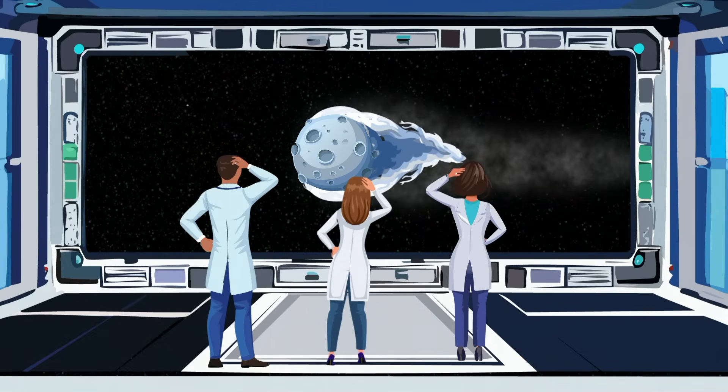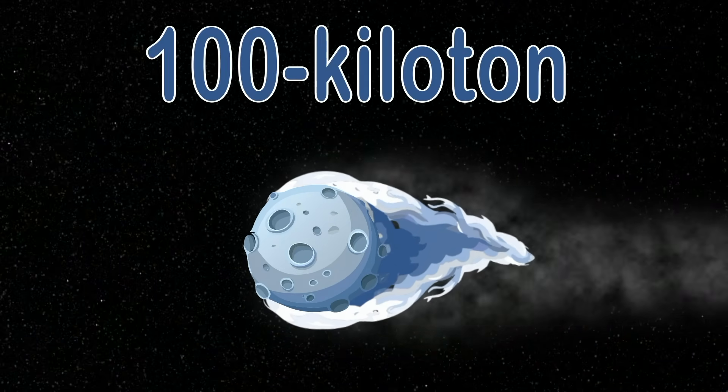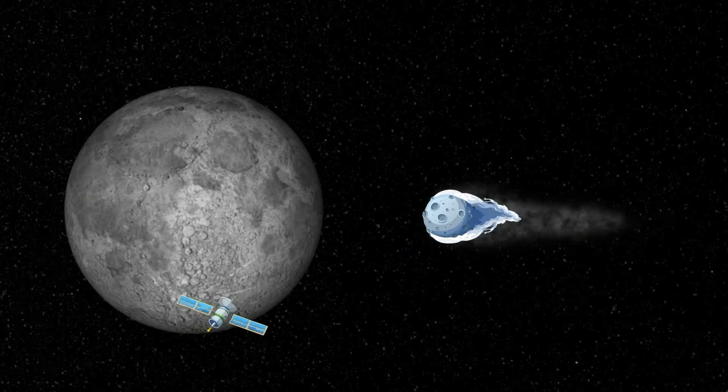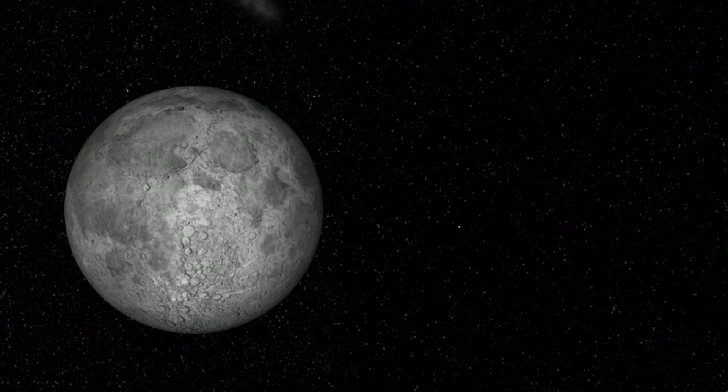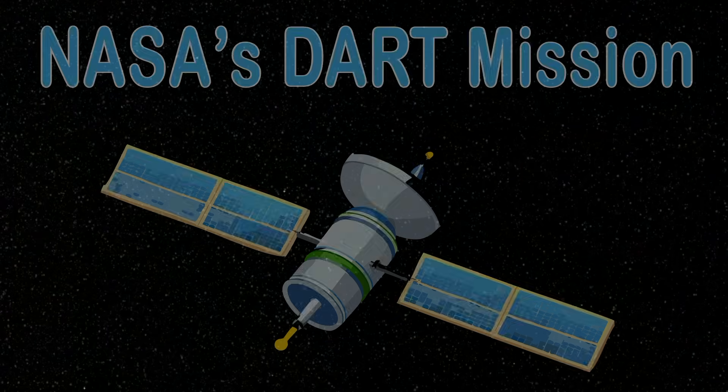But how do humans plan on stopping me? With 100 kiloton devices to break me up potentially? You'd be using a spacecraft to alter my trajectory, as done with NASA's DART mission you've already seen.